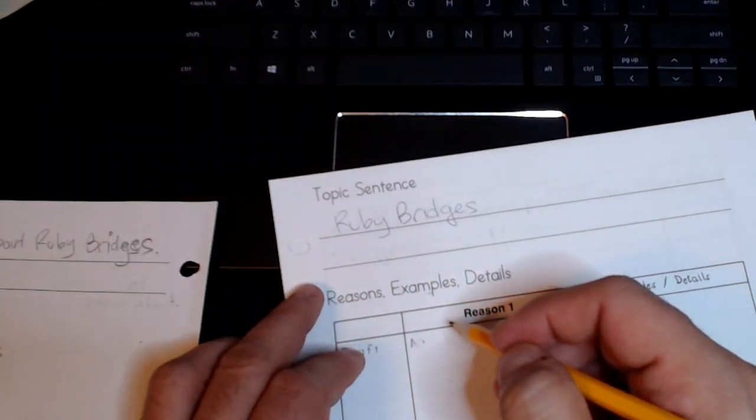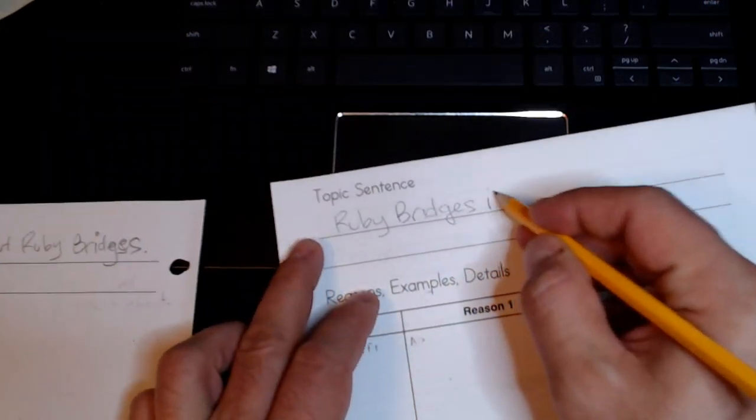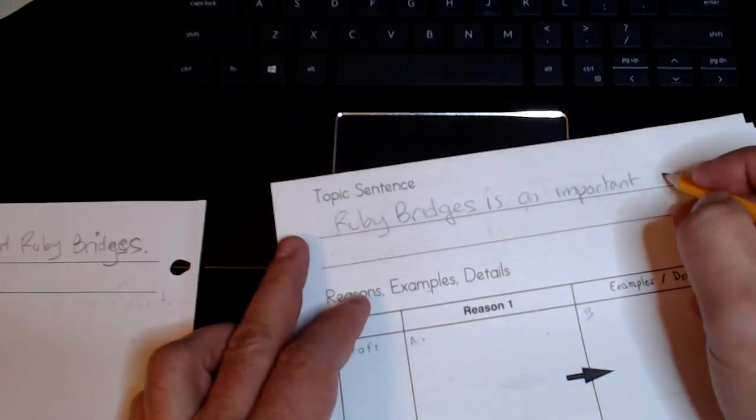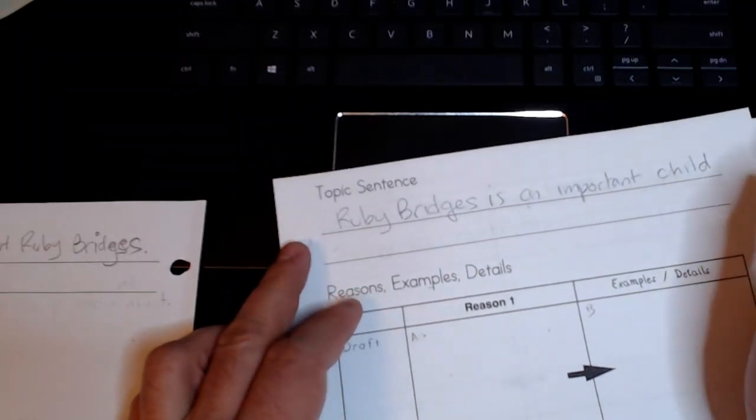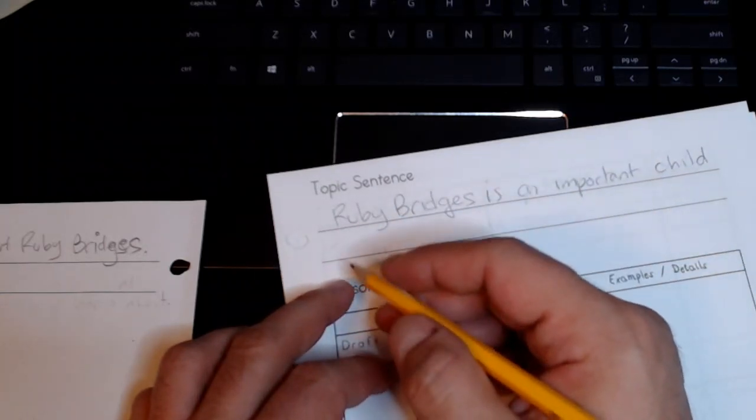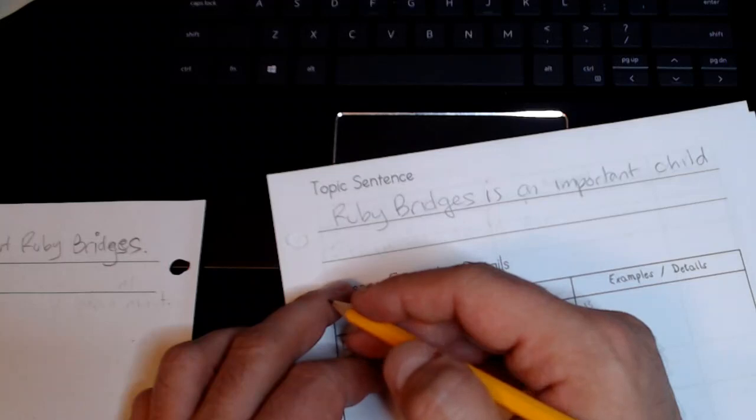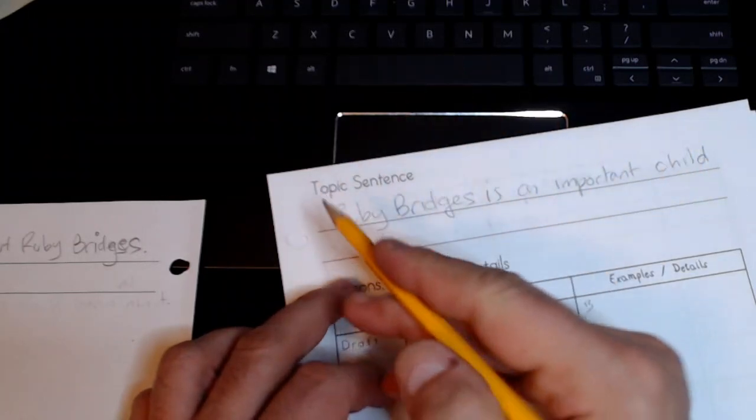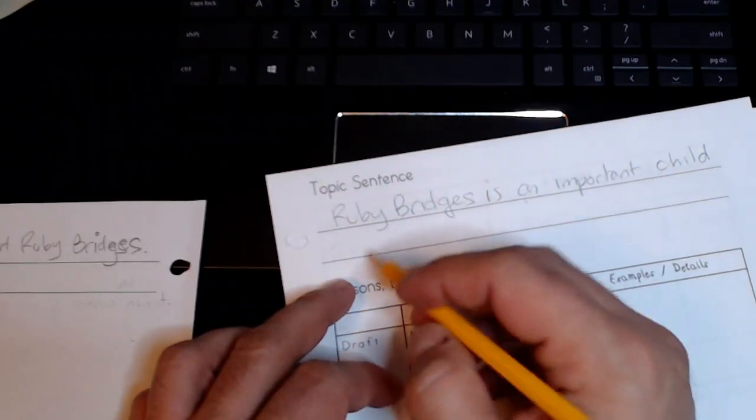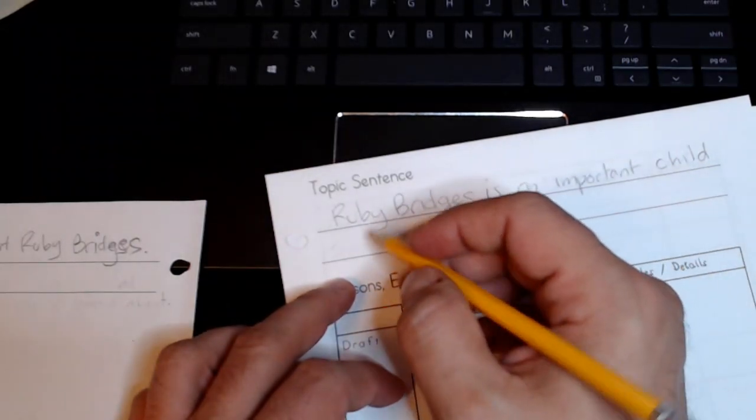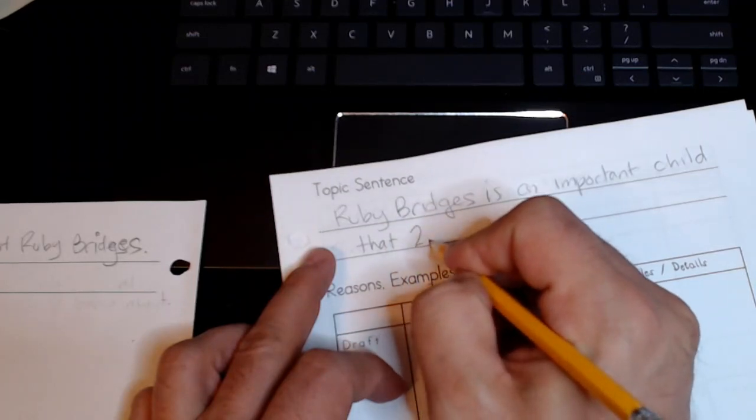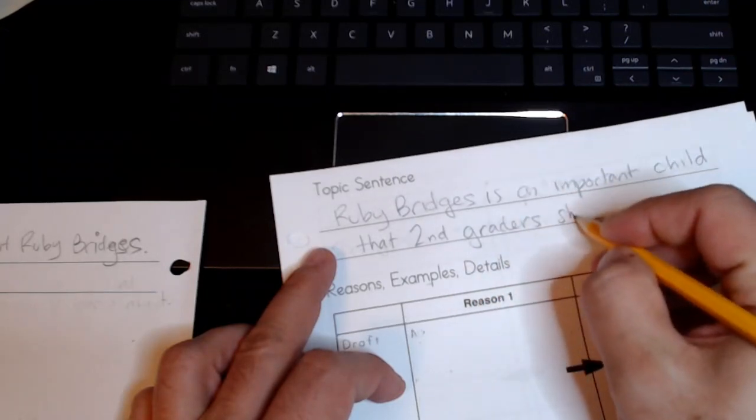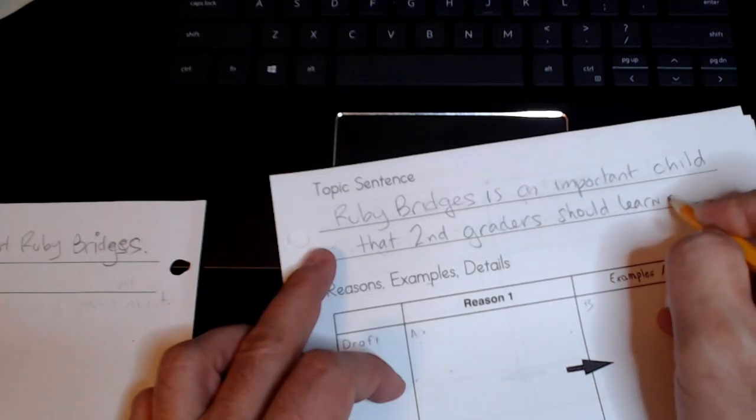What about her? Well I think Ruby Bridges is an important, there goes that word again, child. I want to focus on the fact that she was a young person who had an effect on this world. There are plenty of stories about adults, but when you can find a story where somebody young had quite an effect. We really want to celebrate that. So Ruby Bridges is an important child that second graders should learn about.